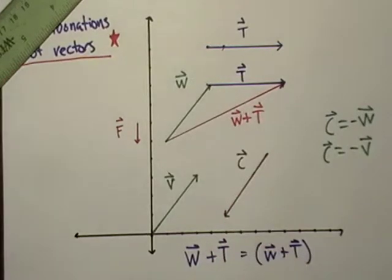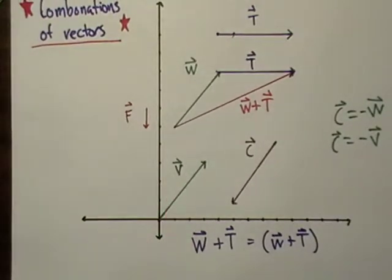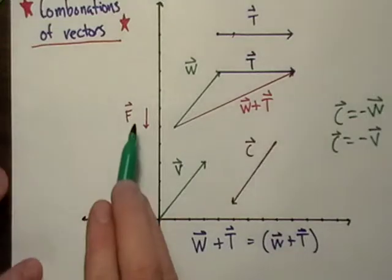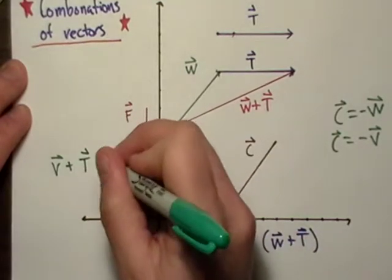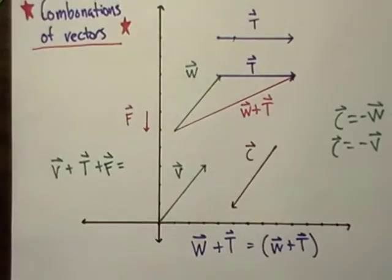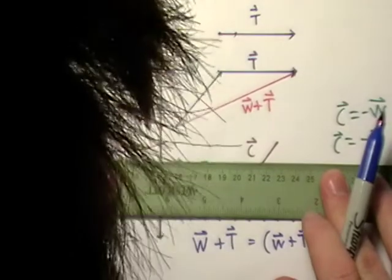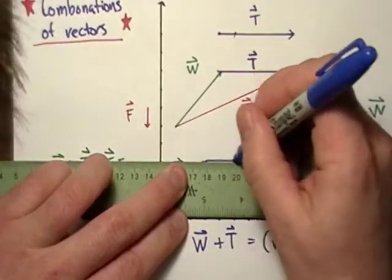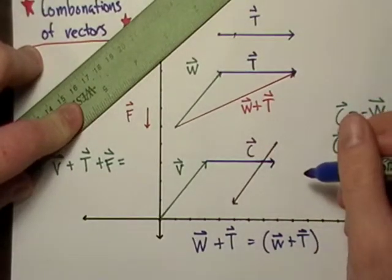Now we can also do this again. Let's combine vector V with vector T plus vector F. Vector F is just kind of chilling over here. So we're going to go V plus T plus F. I'm going to grab that straight edge again and draw a vector down here. I think I overshot it a little, but that's okay.